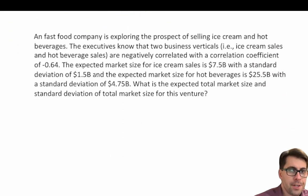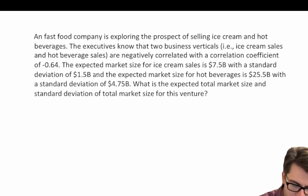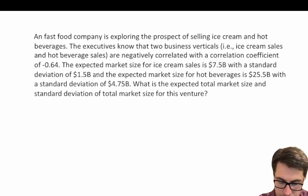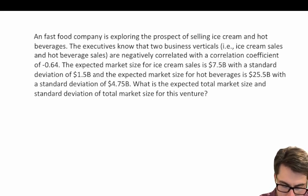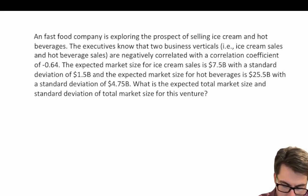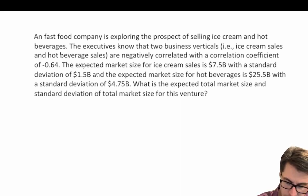Let's do one more question. A fast food company is exploring the prospect of selling ice cream and hot beverages. The executives know that the two business verticals — ice cream sales and hot beverage sales — are negatively correlated with a correlation coefficient of negative 0.64. The market size for ice cream sales is 7.5 billion with a standard deviation of 1.5 billion, and the expected market size for hot beverages is 25.5 billion dollars with a standard deviation of 4.75 billion dollars. What is the total market size and standard deviation for this venture?